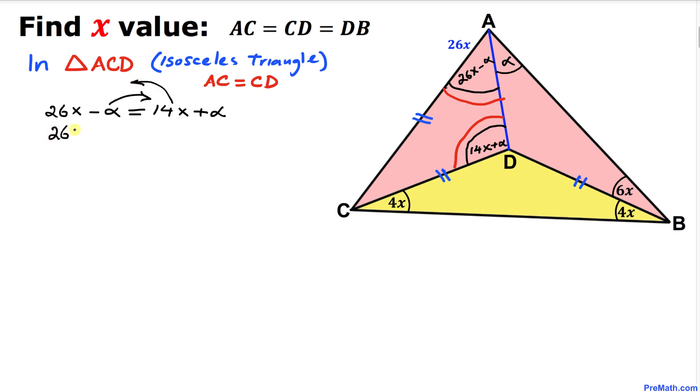So we are going to have 26X minus 14X equal to alpha plus alpha. So that is going to give us 12X equal to 2 alpha.